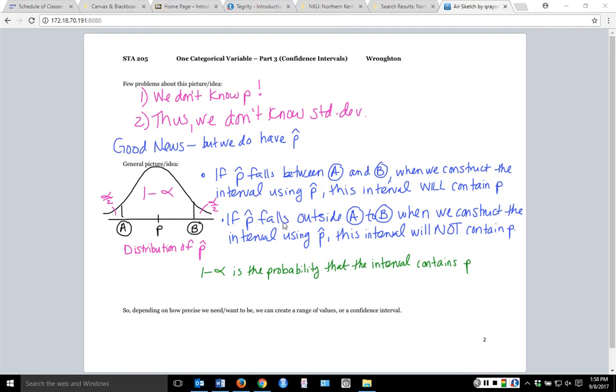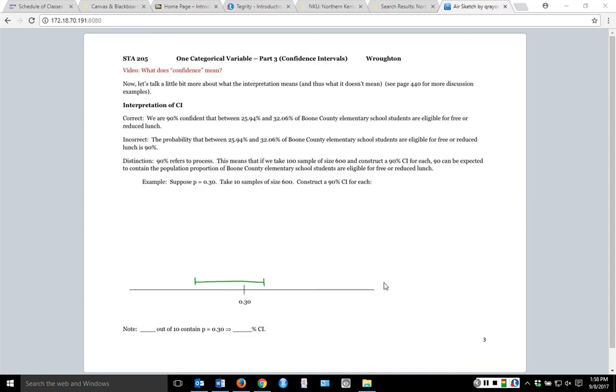But just as we said here, sometimes P is not going to be in our interval. But how often should that happen? So if I constructed 10 intervals, different P hats are going to give me a different range of values.